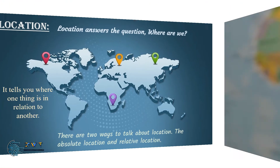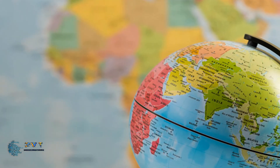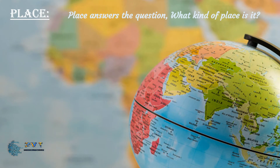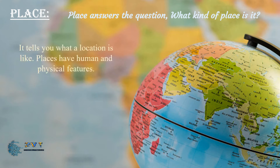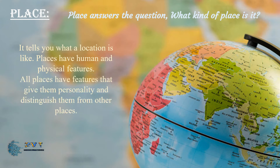Place tells you what a location is like. Places have human and physical features that give them personality and distinguish them from other places. No two places can be exactly alike — each has its own unique characteristics.